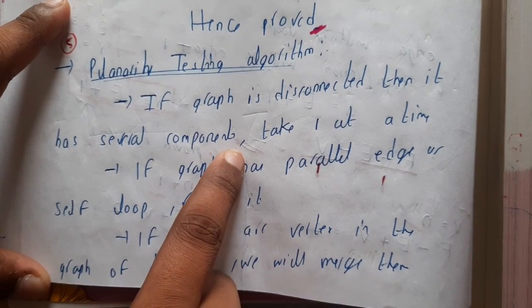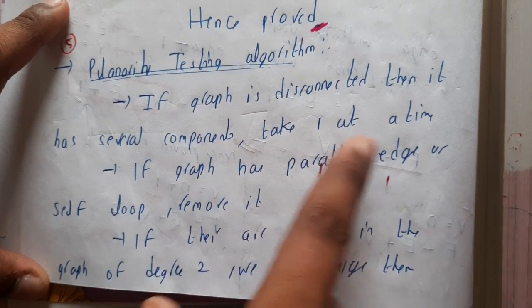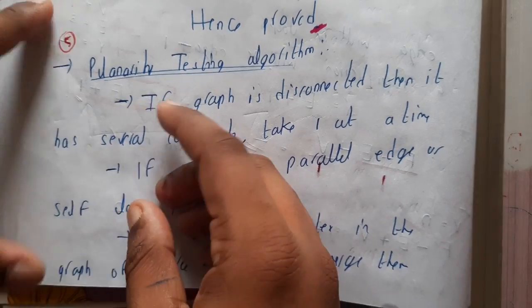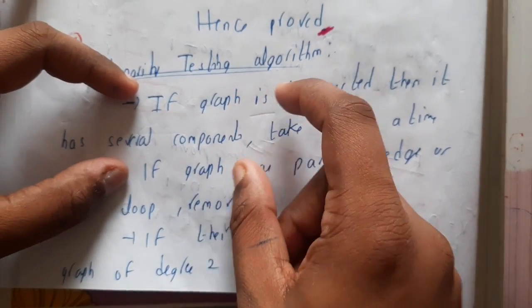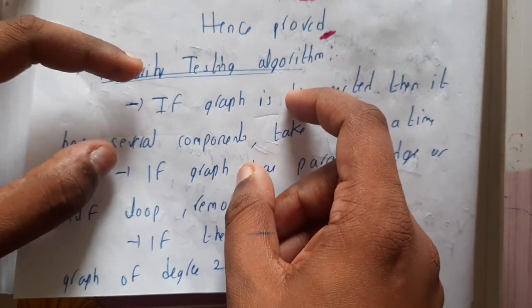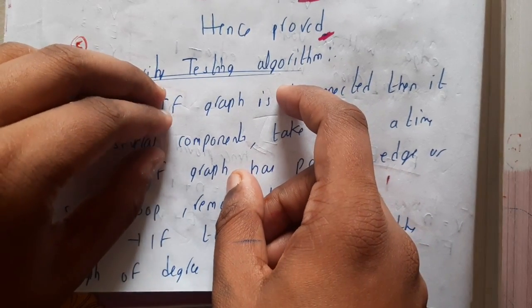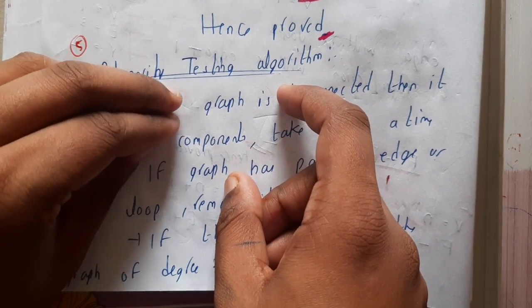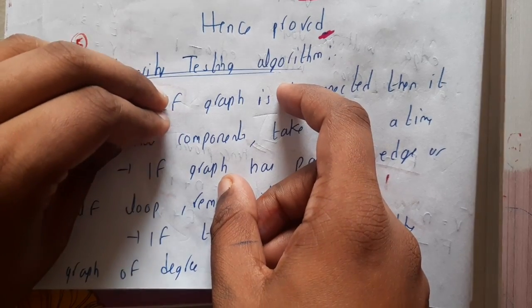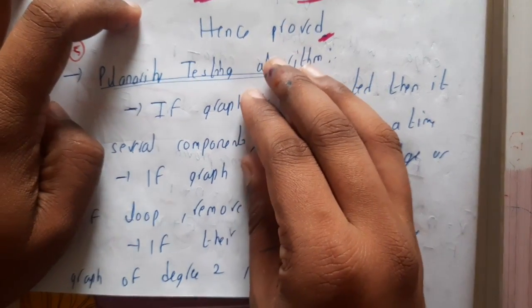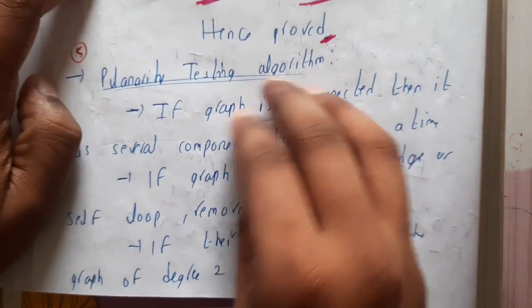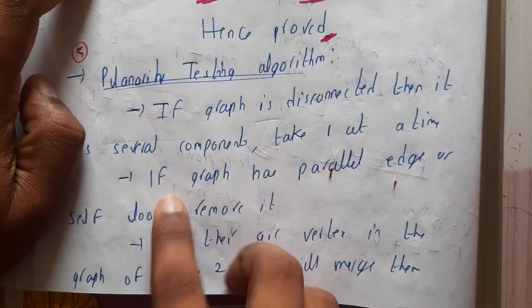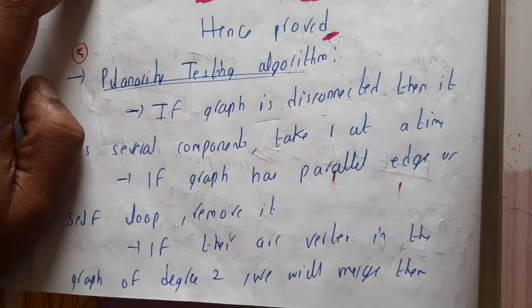In that situation we should take one component at a time. So assume that a particular graph is disconnected, it is having two different parts. To test the planarity you will be selecting the first part and checking the planarity, and once you got the result whether it is a planar graph or not, then you will be moving on to the next component.